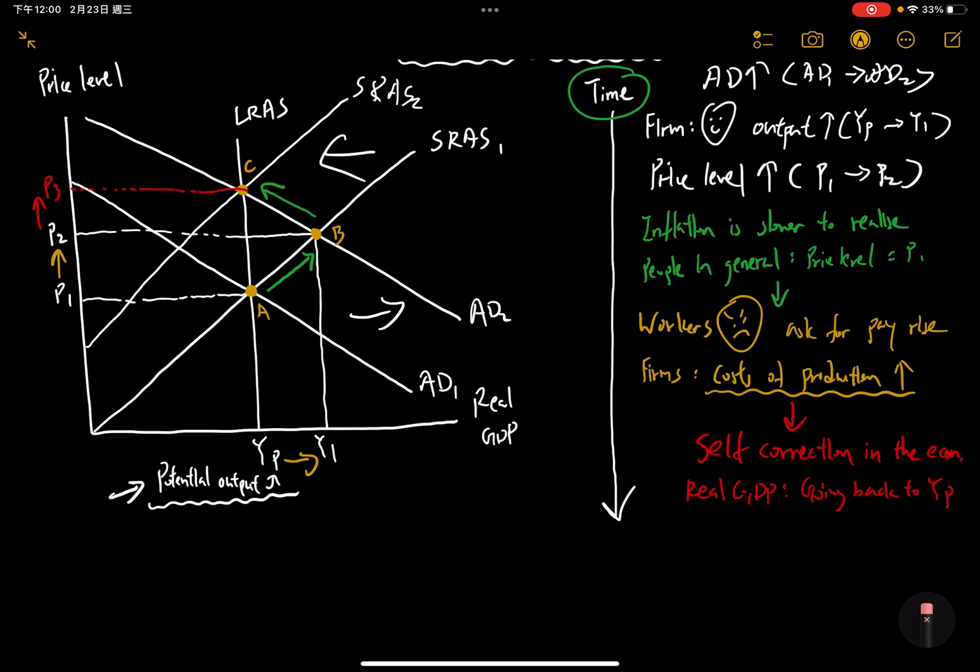Because when you look at this self-correction mechanism, you realize when we change the AD from a very optimal level of output, which is point A, eventually we will go back to our potential output, but at a higher price level. So what is the point of doing all these? There's no point of doing this.